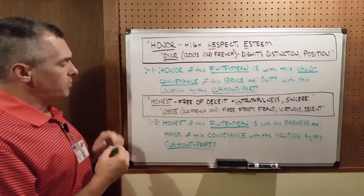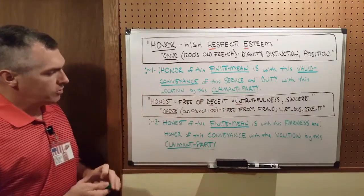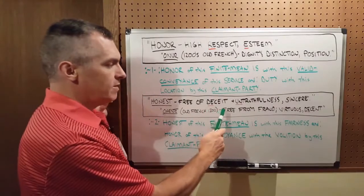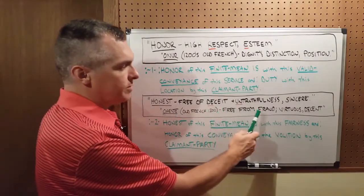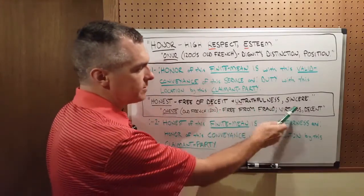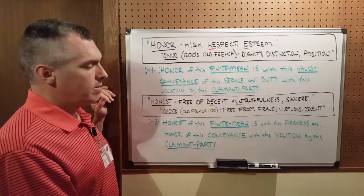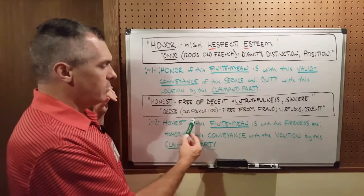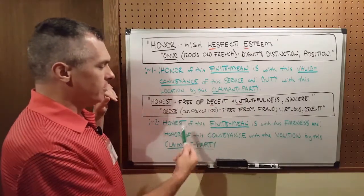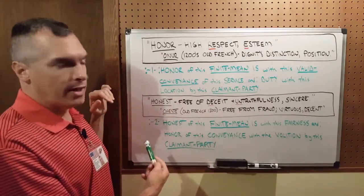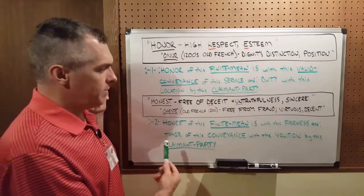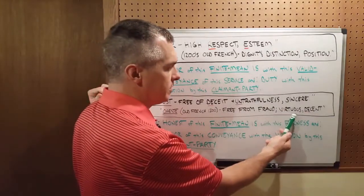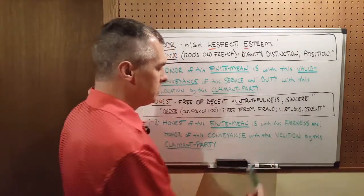Now the next word, honest. Google defines it as free of deceit and untruthfulness, sincere. The word honest comes from the 1300s, an old French word 'honeste,' which means free from fraud, virtuous, decent.